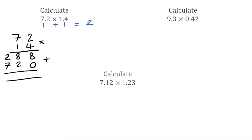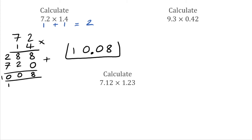Adding the two rows together: 8 add 0 is 8, 8 add 2 is 10 so 0 carry the 1, then 2 add 7 is 9 add that 1 is 10. So our answer to 72 multiplied by 14 is 1008. But we know our answer is going to be to two decimal places, so the answer to the original question is 10.08.